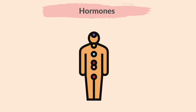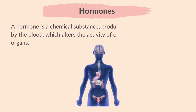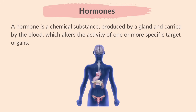The hormone system, also called the endocrine system, produces and releases chemical messengers called hormones that regulate various functions in the body. A hormone is a chemical substance produced by a gland and carried by the blood, which alters the activity of one or more specific target organs.